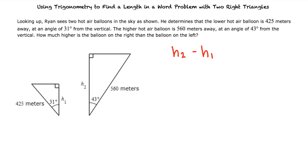We know the angle, the length of the hypotenuse, and we want to find the length of the adjacent side. That means we can use the cosine equation, right? That's right. We can substitute in our known values and solve for H1. We see that the height of the left balloon is 364.3 meters.